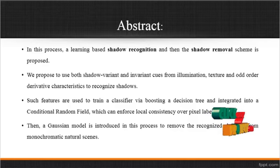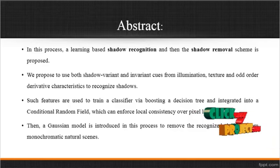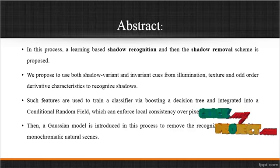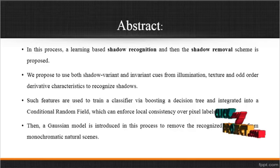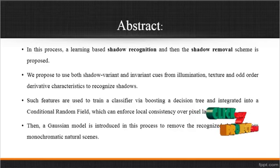Such features are used to train a classifier via boosting a detection tree, and then integrated into a Conditional Random Field (CRF), which can enforce local consistency over pixel labels. Then a Gaussian model is introduced to remove the detected shadows from the Monochromatic Natural Scenes.